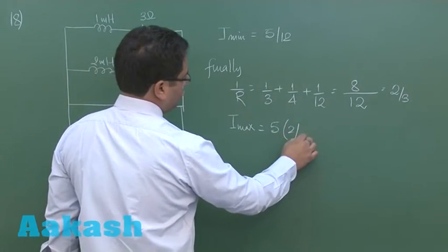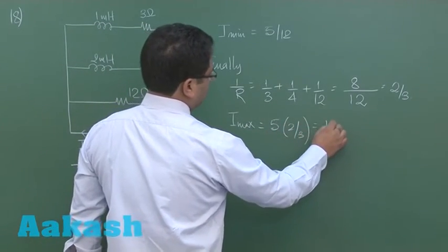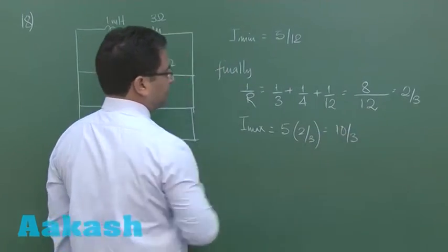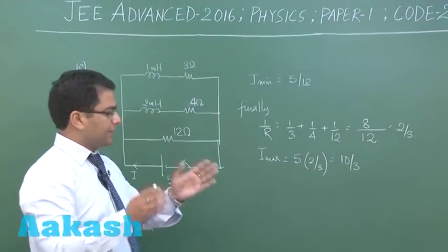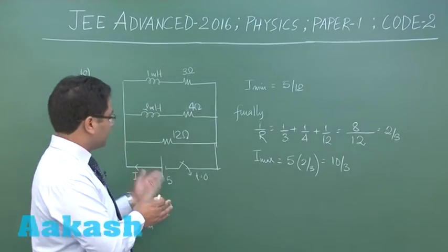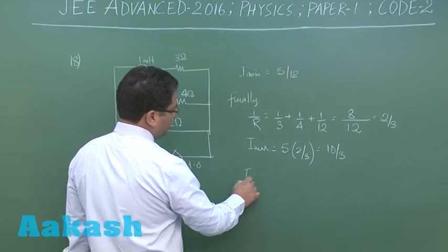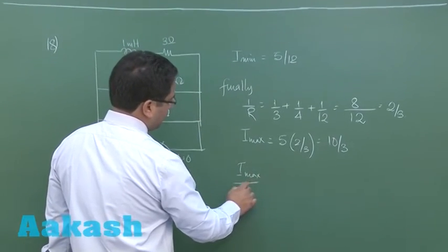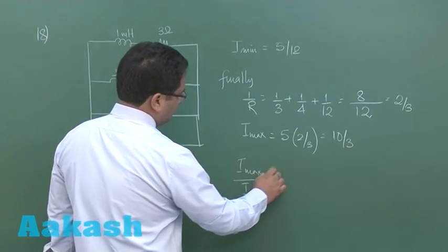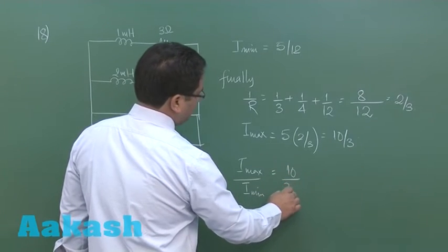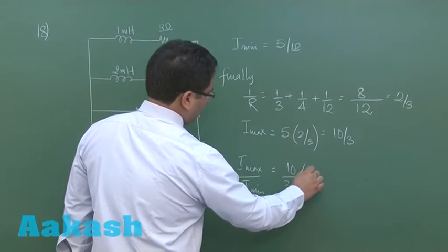So the maximum current is at infinity and the minimum current is at t equals zero. All we need to do is to calculate the ratio of i_max by i_min, and that comes out to be 10 by 3 divided by 5 by 12.